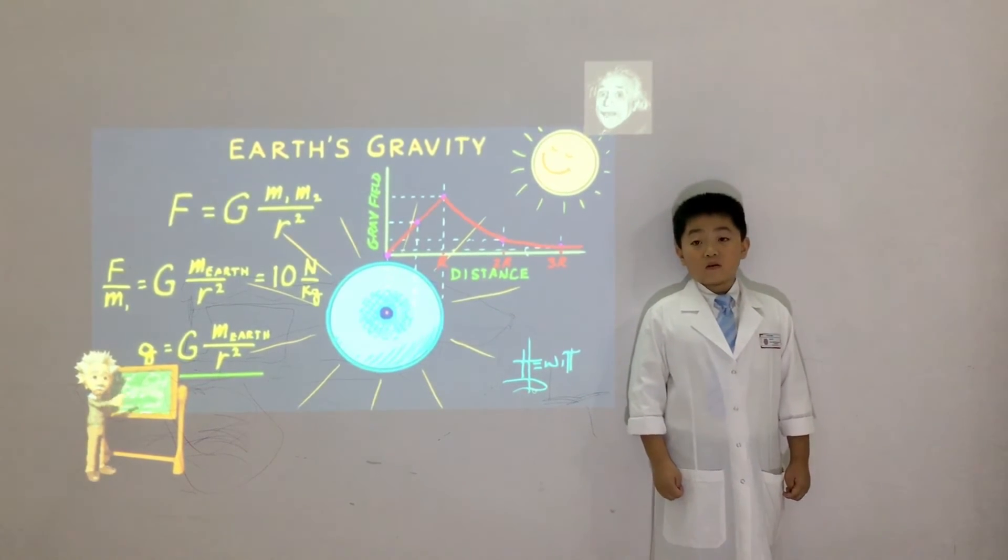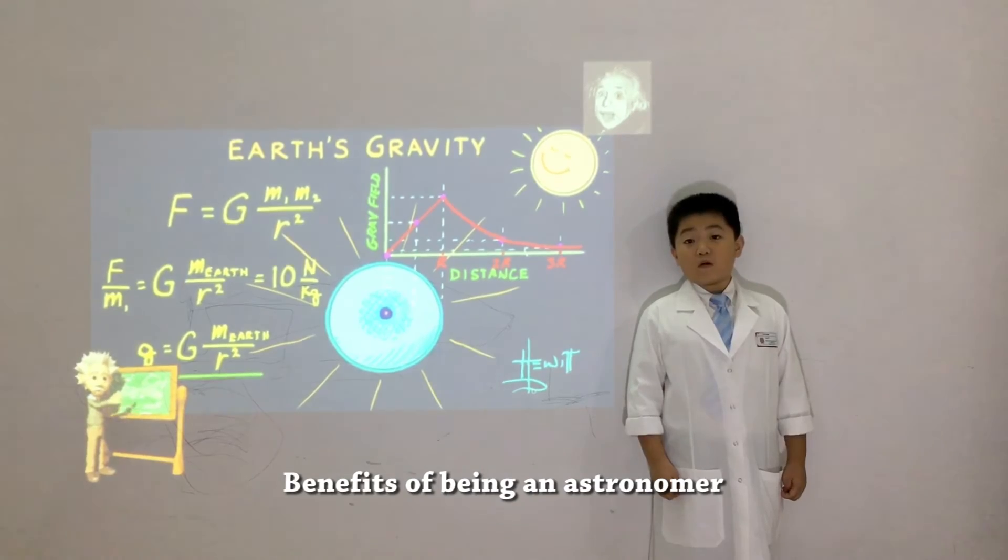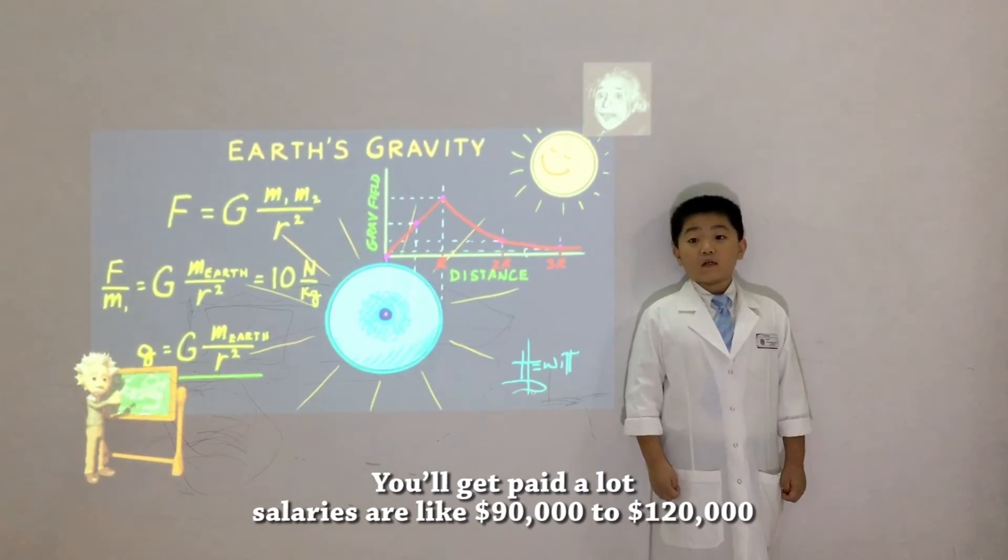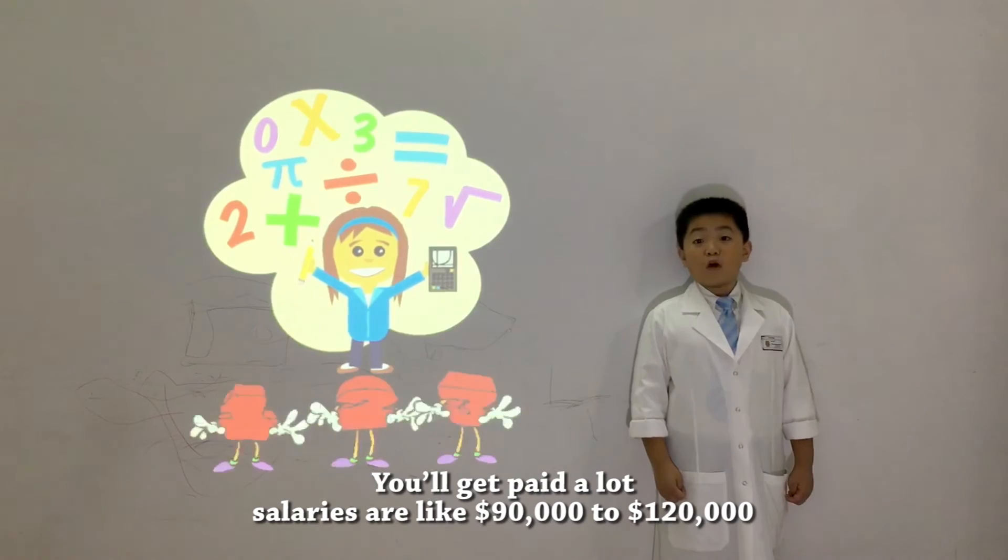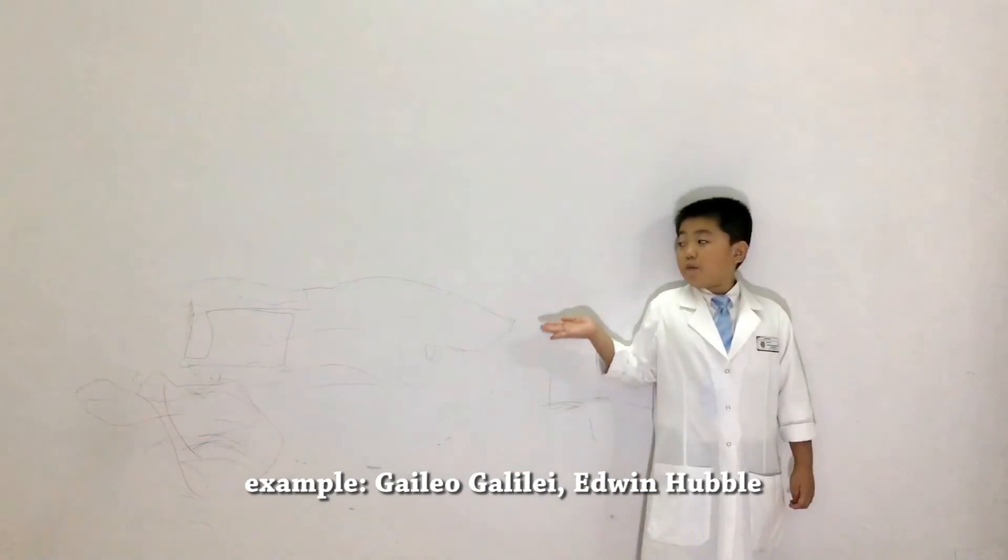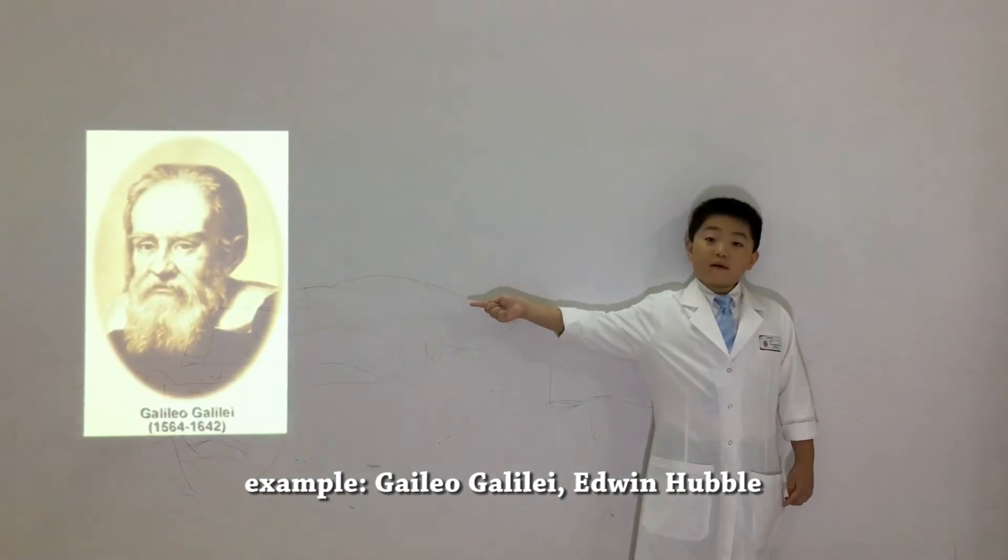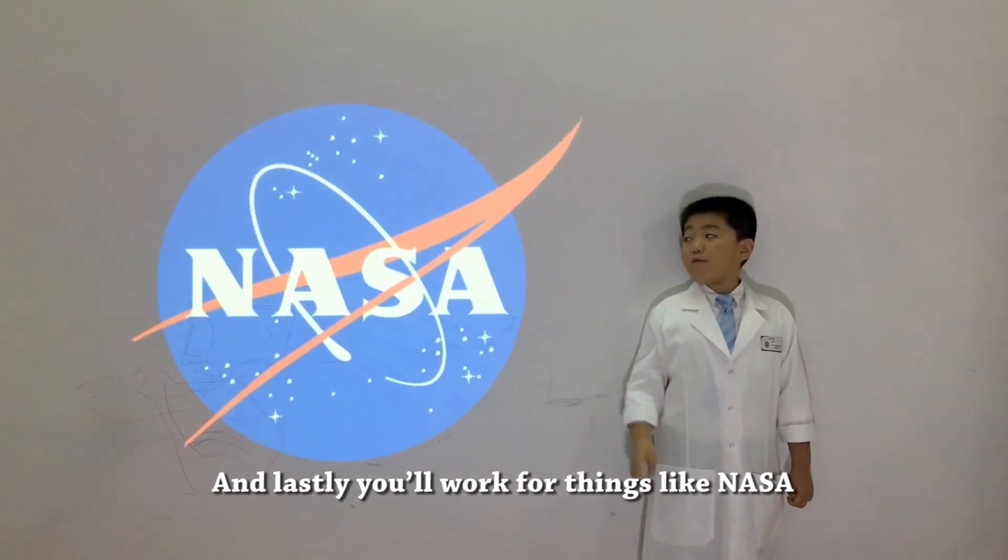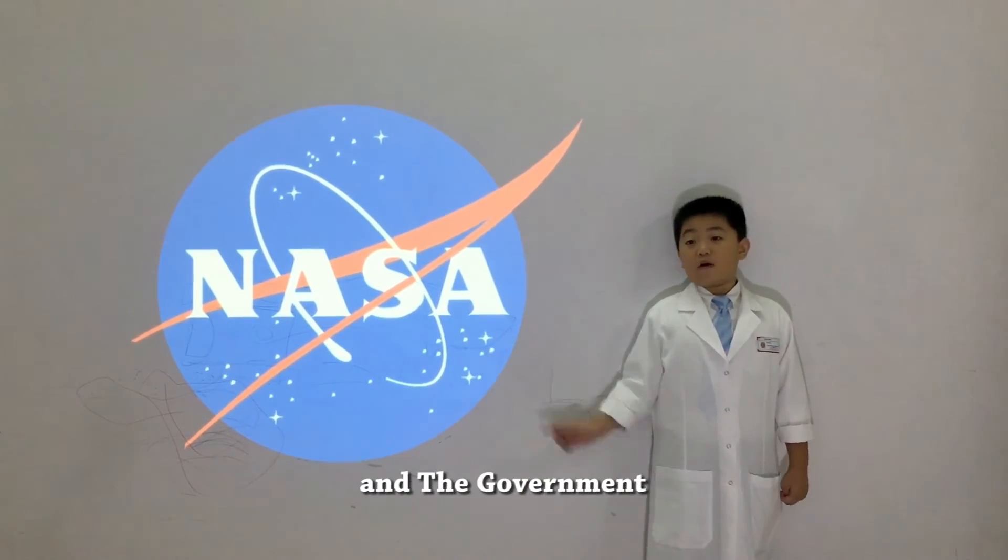Third, the benefits of being an astronomer are, you'll get paid a lot. Salaries are like $90,000 to $120,000. You'll also have a chance of becoming popular. Example, Galileo Galilei, Edwin Hubble. And lastly, you'll work for things like NASA and the government.